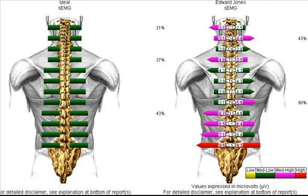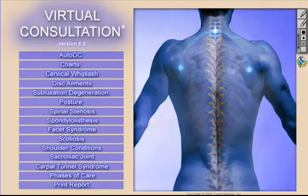Let's take a minute and look at a MioVision static SEMG scan of a patient with low back pain due to pelvic imbalance. Let's assume this patient has an SI joint condition. Here we have a static SEMG scan which indicates high amounts of muscle tension.